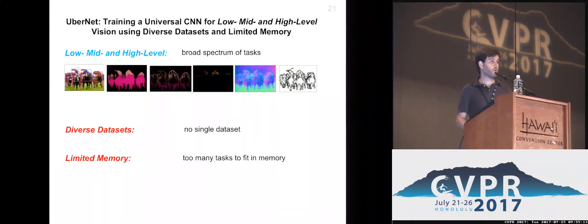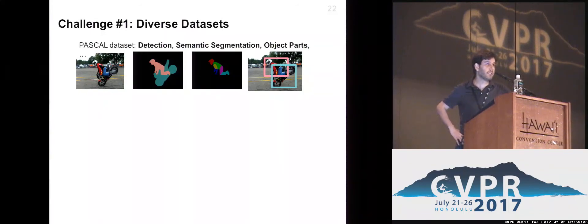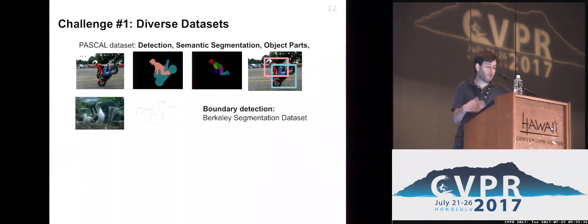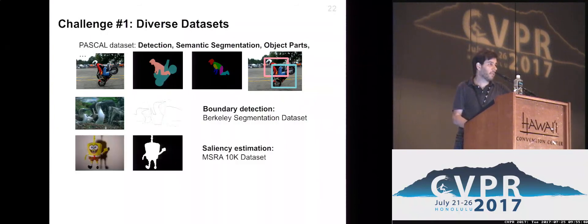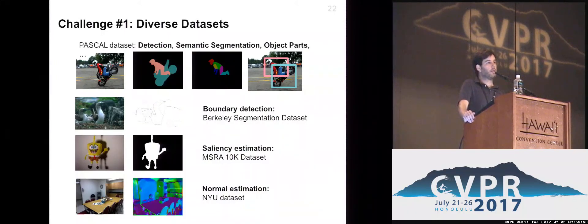For the first problem: when working on high-level tasks we have Pascal or COCO, which have annotations for detection, semantic segmentation, part segmentation, and other object-specific tasks. But for low-level tasks we need to turn to other datasets — for boundaries we typically have the Berkeley Segmentation Dataset, for saliency we have the MSRA dataset, and for normal estimation we need depth sensors which capture the geometry of the underlying scene. Practically, we cannot have all tasks with joint annotations across all images, so we need to find a way to live with this.